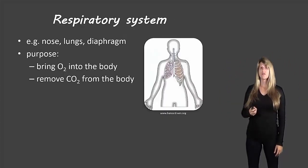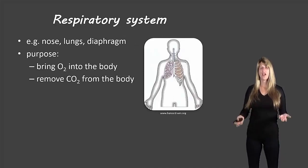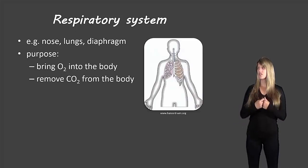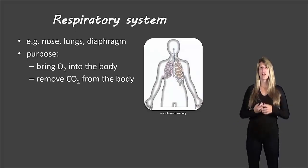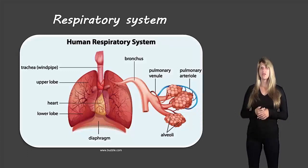The next system is the respiratory system. It contains the nose, lungs, diaphragm and so on. Its purpose is to bring oxygen into the body and remove carbon dioxide from the body. Here's an example of the human respiratory system.